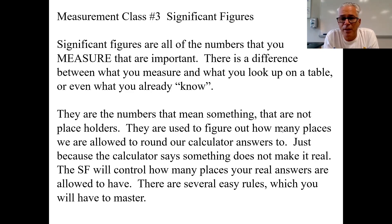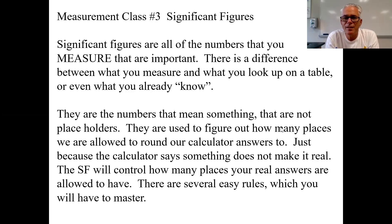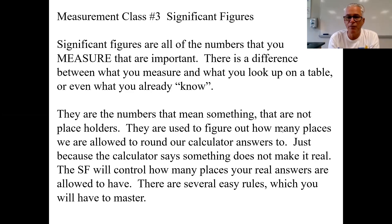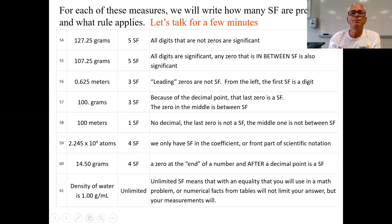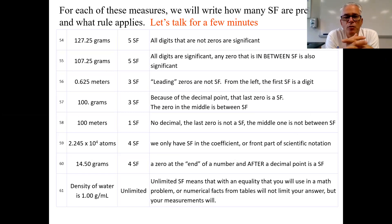Your answer can't possibly be better than how well you measured. So, significant figures — there are six or seven rules. They're all easy, but the problem is there are six or seven of them and you have to keep track of them. Let's go through all of these rules nice and slow.